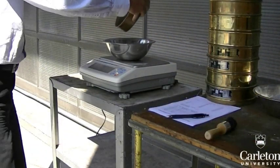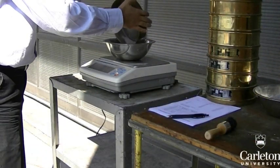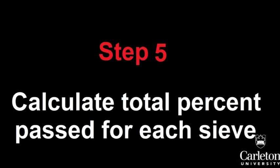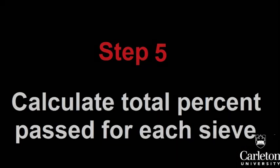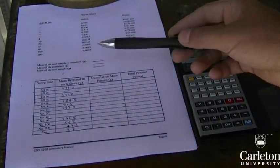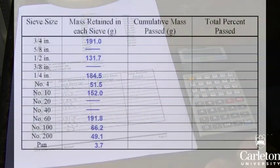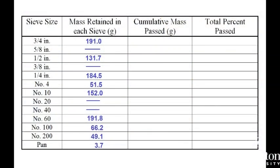Finally, record the mass of the material in the pan. Using a table like this one, calculate the percentage of soil passing each sieve. First, add the total mass of material passing all sieves and record it.